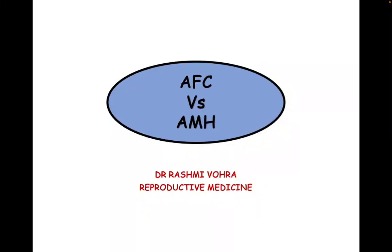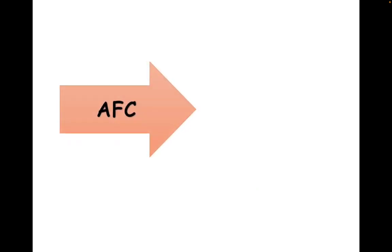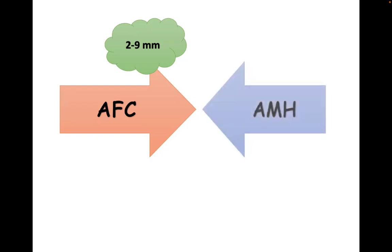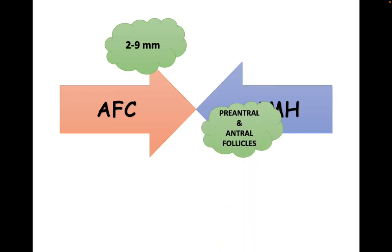Hello all. Today we will be discussing what is AFC and what is AMH, and what to do if a disparity comes between AFC and AMH — which should be more followed, AFC or AMH. Firstly, what is AFC? Antral follicle count is all the follicles which are 2 to 9 mm; they are considered in the antral follicle count.